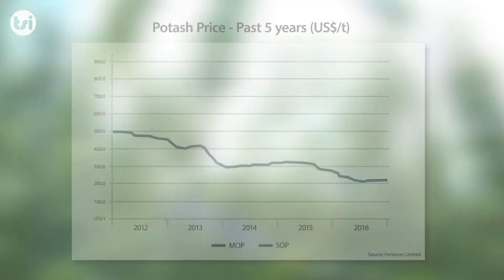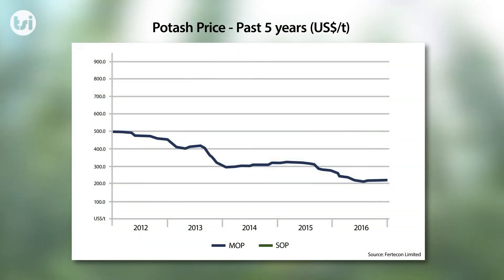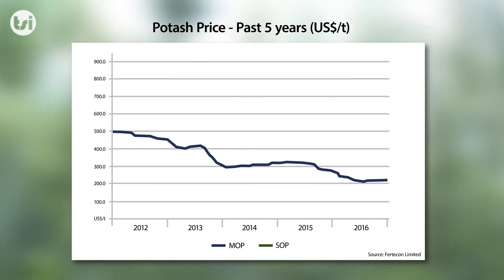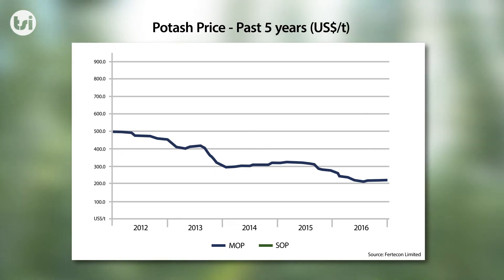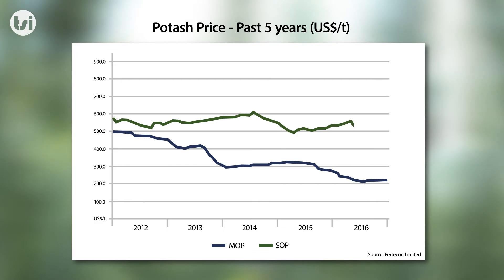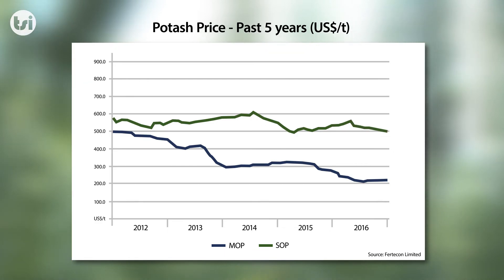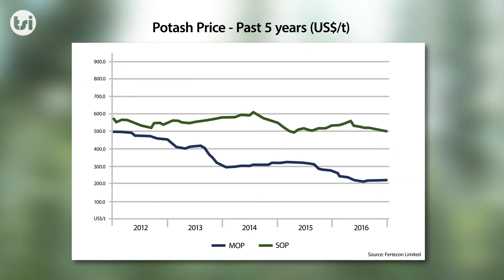Due to an oversupply in production, the MOP price has fallen to a low of around $200 per tonne. However, by comparison, the SOP price has remained relatively stable, with a current premium of around $300 per tonne compared to the MOP price.